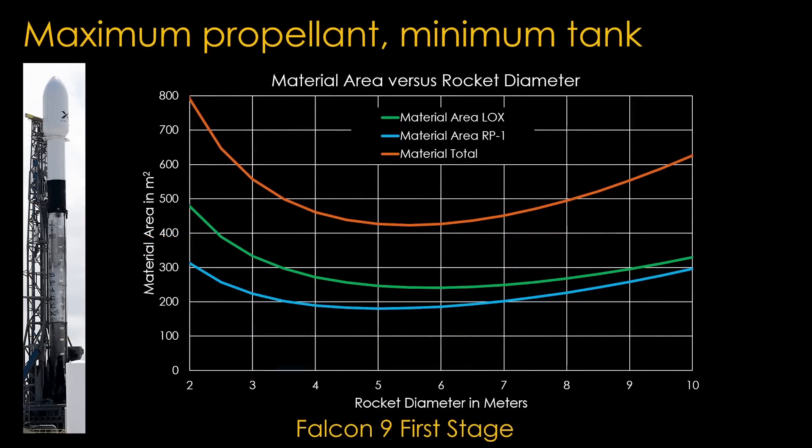Now we can calculate how much material it will take to hold that propellant. Excel coughed up this chart, starting with a very thin 2 meter rocket on the left and a fat 10 meter rocket on the right. We can see that the total material required is at a minimum at about 5 meters in diameter. The actual Falcon 9 is 3.7 meters in diameter, which means that the tanks use about 13% more material than a 5 meter one would.